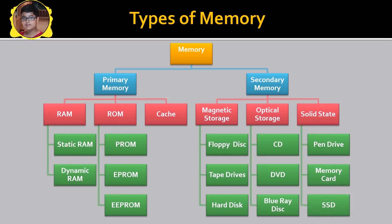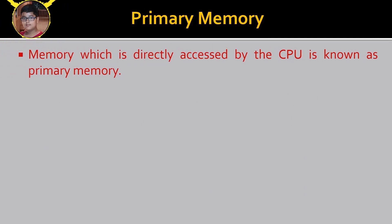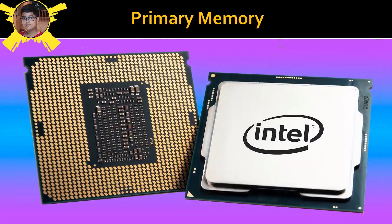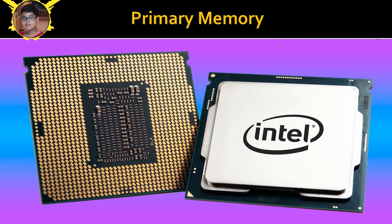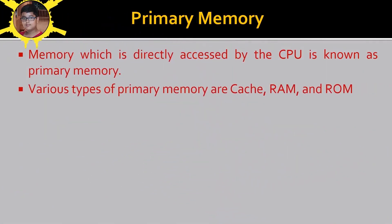In this video we will be discussing only the primary memory, and we will discuss secondary memory in our next video. Primary memory is memory which is directly accessed by the CPU. Interestingly, the picture you can see is actually the picture of the CPU — yes, that chip is the CPU. The various types of primary memory are cache memory, RAM, and ROM.